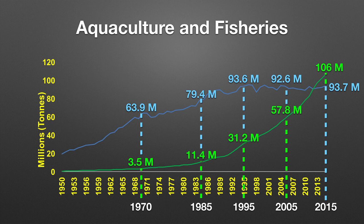Putting these two graphs together, we look at the difference over the past 60–65 years in aquaculture and fisheries global production. In the 1950s there is a big difference, with aquaculture at a minimal point. By 1985, aquaculture reached 11 million metric tons while fisheries was way ahead at 79 million metric tons. Aquaculture shows a sharp rise, whereas fisheries has remained stable since 1995 at about 93–94 million metric tons, while aquaculture has continually risen.